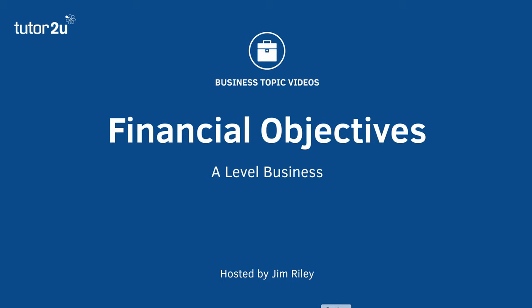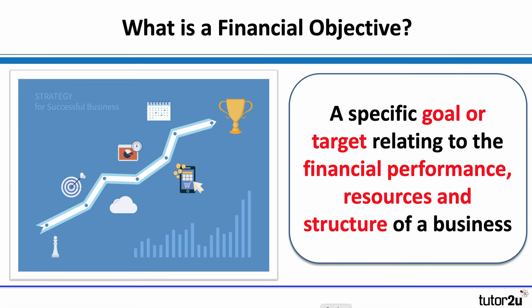In this video we're going to take a look at the key financial objectives that are typically set by businesses, and also consider what kind of objectives these are and why they're set. With an objective it's all about setting a target — a specific goal — that you want to achieve. For financial objectives, these are going to be targets or goals in relation to financial performance, covering more than just sales or profit.